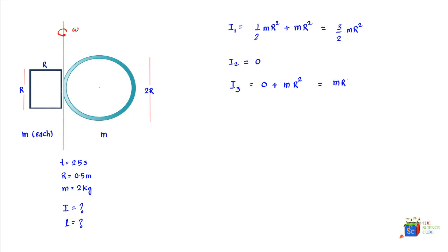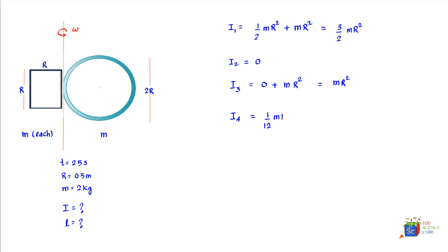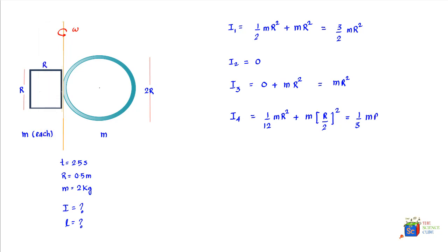For the remaining two vertical bars, we again use the parallel axis theorem. If the axis of rotation passed through the center of each rod, I would be (1/12)mr². The axis has shifted by r/2, so we add m·(r/2)² = mr²/4, giving I₄ = (1/12)mr² + (1/4)mr² = (1/3)mr². The fifth rod has the same configuration, so I₅ = (1/3)mr² as well.